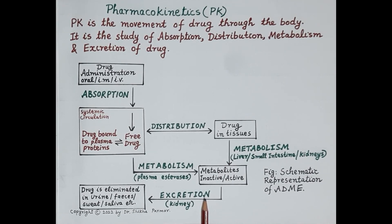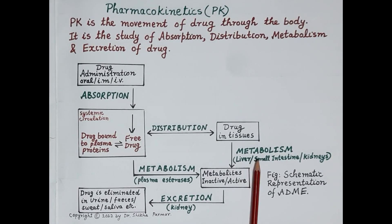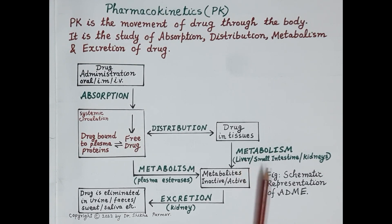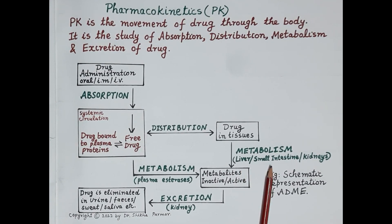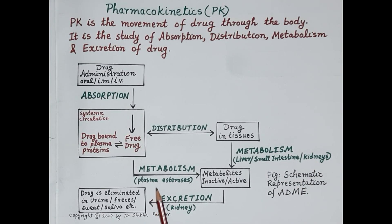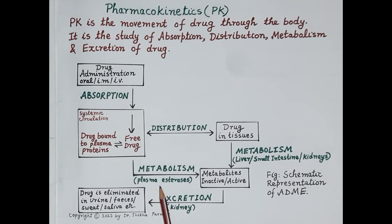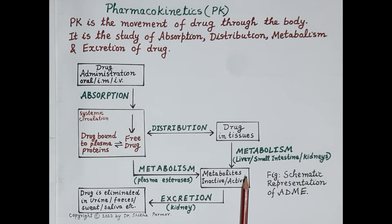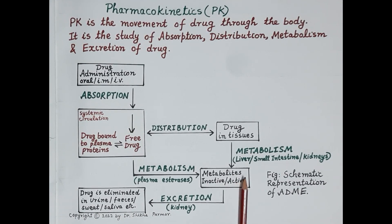Metabolism and excretion occur simultaneously along with distribution, making the process highly complex. The liver is the main site of metabolism. Other sites include the small intestine, kidneys, lungs, and plasma. Drugs are metabolized so that they are converted into polar or water-soluble forms and can be easily excreted from the body.